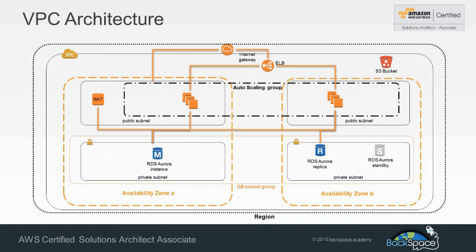We're going to start off by creating a VPC in a single availability zone with private and public subnets, then expand that to a second availability zone and create a DB subnet group. Within that private subnet we will create an RDS Aurora cluster across multi-AZ, with an RDS Aurora standby instance and an RDS Aurora replica to take the read load off our RDS master database.